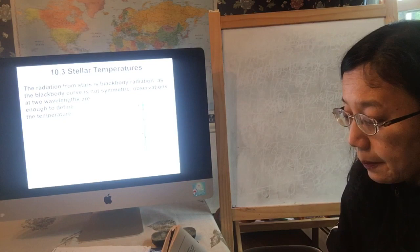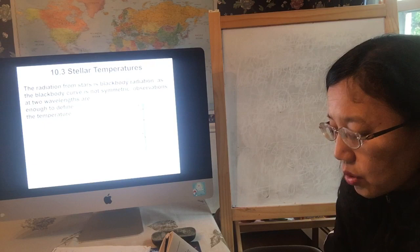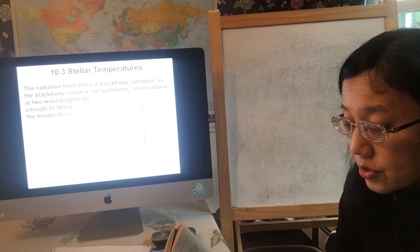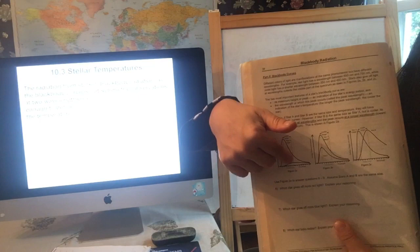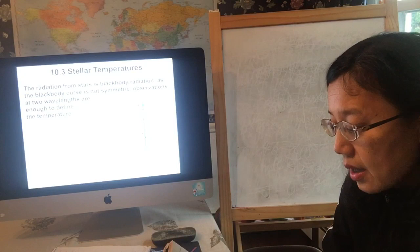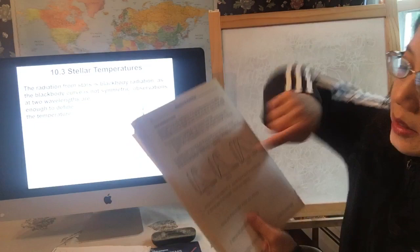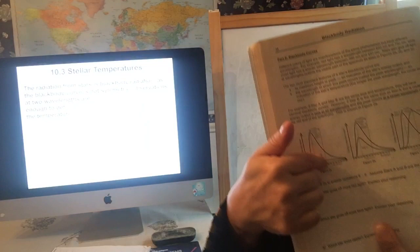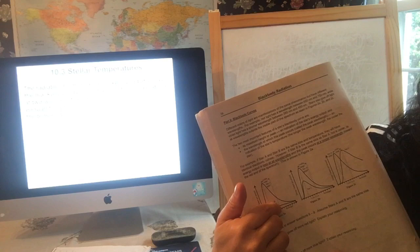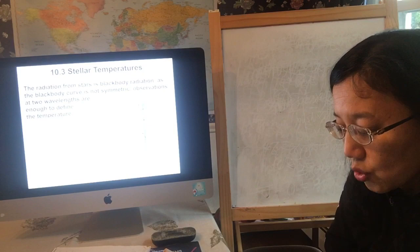However, if star B is the same size as star A but cooler, then the energy output — the luminosity — is smaller at all wavelengths. You can see star B is much lower than star A. Also, the peak occurs at a longer wavelength: the peak of star B happens at the red end, telling you star B is a red, cooler star.